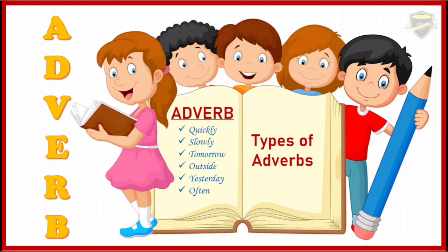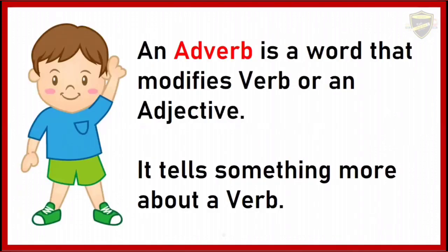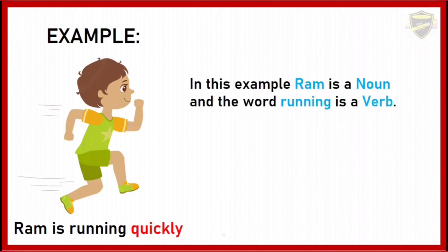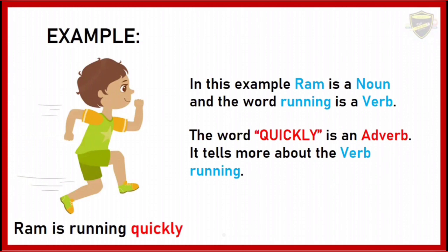So, first of all, let us see what is an adverb. An adverb is a word that modifies a verb or an adjective. It tells something more about a verb. For example: Ram is running quickly. Here, Ram is a noun and the word 'running' is a verb. The word 'quickly' is an adverb — it tells more about the verb 'running.'